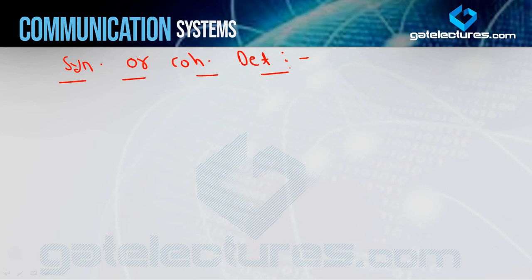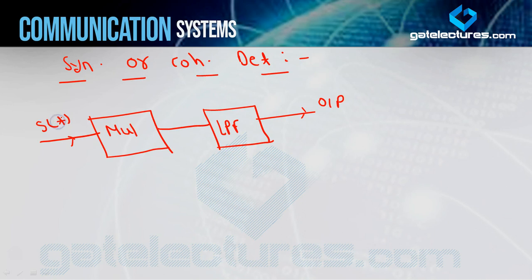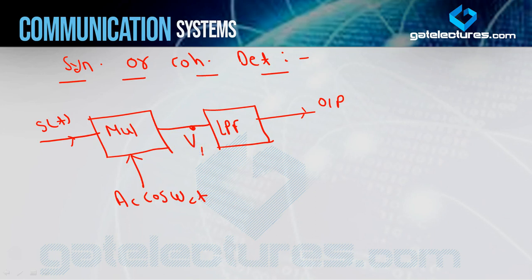So the method will be as follows: first, you need to use a balanced demodulator, which you can also simply call a multiplier. The next block input will be the same carrier that we used in case of the transmitter when we generated the DSBSC waveform. That means the receiver carrier and transmitter carrier both must be the same in terms of phase and frequency.